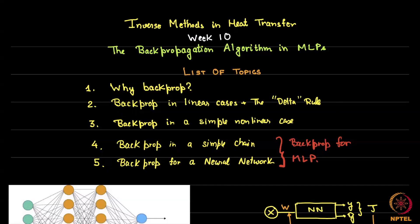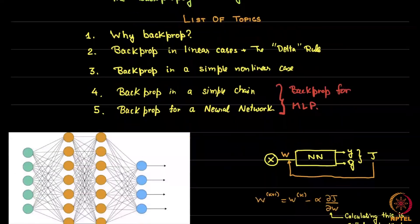We first do backprop in linear cases — we have already done this effectively when we did gradient descent for linear regression — but I'll explicitly point out something called the delta rule. Then we'll quickly extend this to a simple nonlinear case, then look at a case where you have multiple layers but each layer has only one neuron. These two cases are complementary, and finally we'll put this together in a neural network for multi-layer perceptrons.